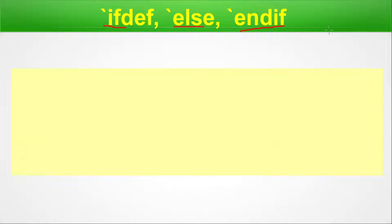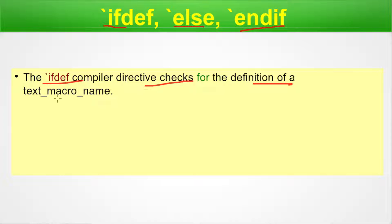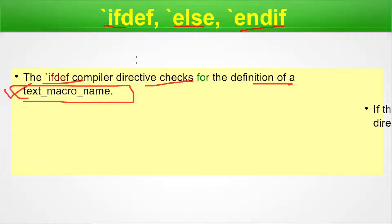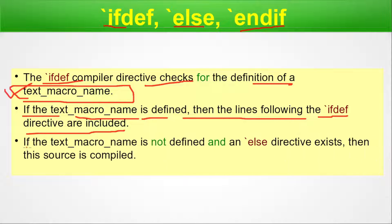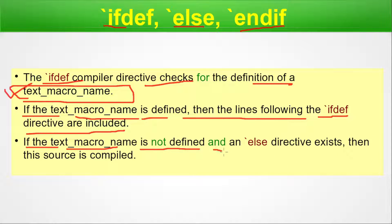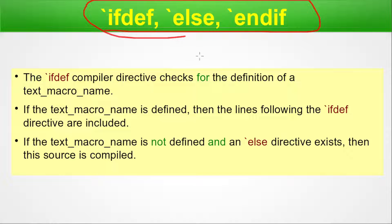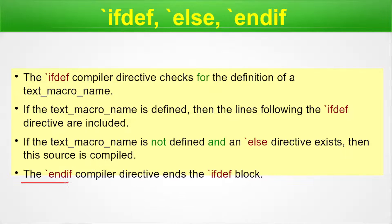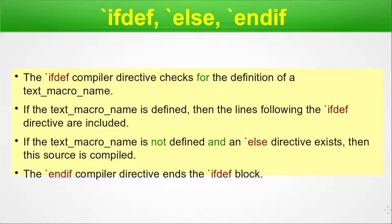For ifdef, else, and endif usage: the ifdef compiler directive checks for the definition of a text macro name. If the text macro name is defined, the lines following the ifdef directive are included. If the text macro name is not defined and an else directive exists, then that source is compiled. So ifdef and endif are paired — ifdef starts the block and endif ends it, with else in between. The endif compiler directive ends the ifdef block.